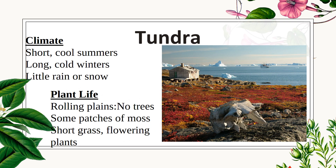Tundra has a climate with short, cool summers and long, cold winters with little rain or snow. Your plant life will be rolling plains with no trees, some patches of moss with short grass and flowering plants during those brief warm summers.